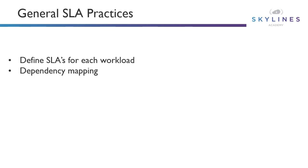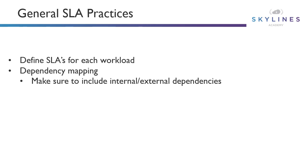Here are some general SLA practices that you should follow. One, define the SLAs for every single workload that makes up the application. One of the biggest problems is dependency mapping — you might have internal and external dependencies that the application relies on that perhaps you haven't completely mapped out. So even if you architect and design and build the most highly available application for the pieces you control, but you're dependent on other workloads running in the environment, that's going to ultimately affect your SLA as a whole.